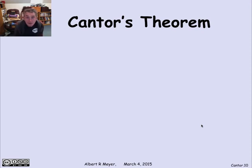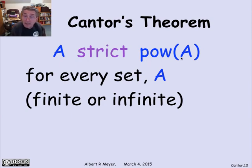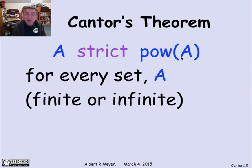Cantor's theorem is a wonderful and powerful generalization of this, with pretty much the same proof. What Cantor's theorem says is beautifully elegant and simple: the power set is strictly bigger than the set — A strict power-set(A) for every set A, even finite ones. If A is finite with n elements, the power set has 2^n elements, and n < 2^n even for n=0 (since 0 < 1). So even for finite sets, A strict power-set(A). But the cool thing is it works even for infinite sets.